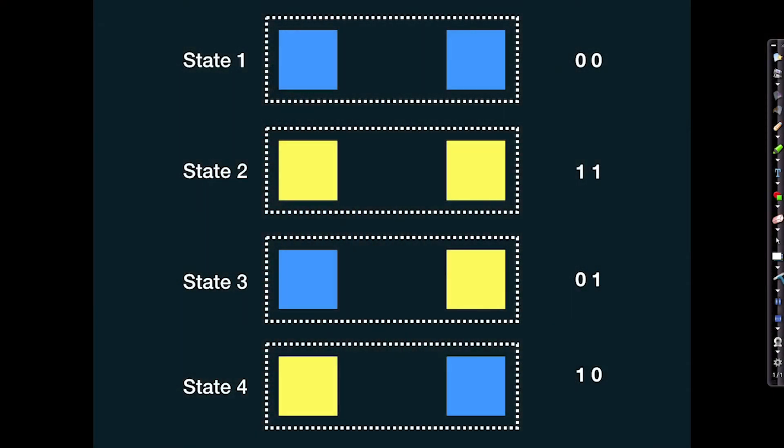This hopefully emphasizes the idea that you cannot determine simply by looking at the state of a system how much information is actually encoded. You need to know how many states are ruled out in order to quantify the amount of information.